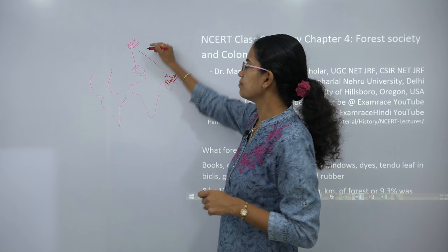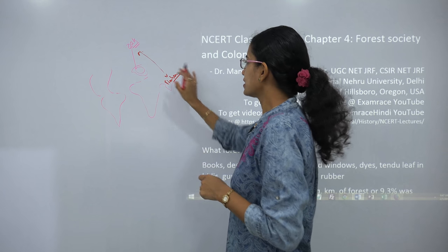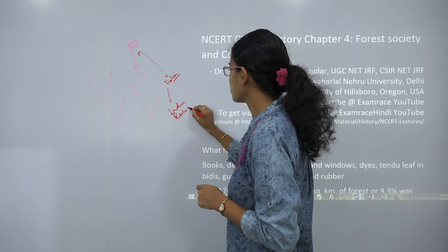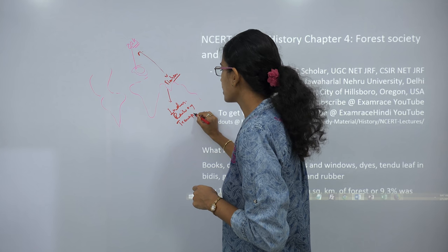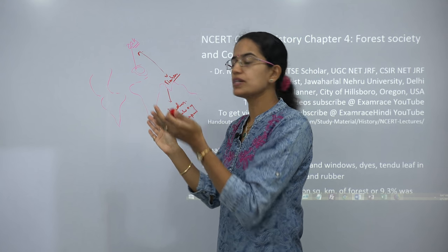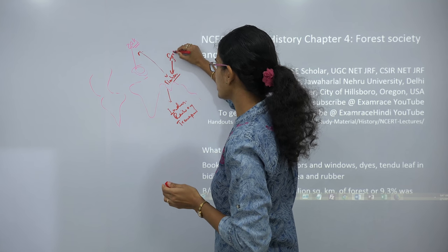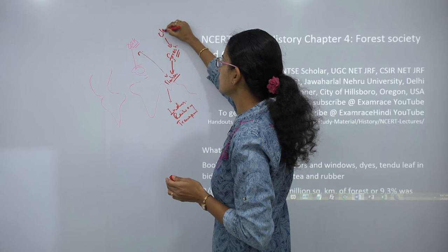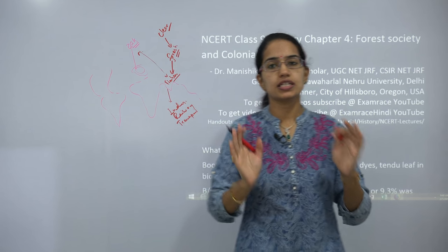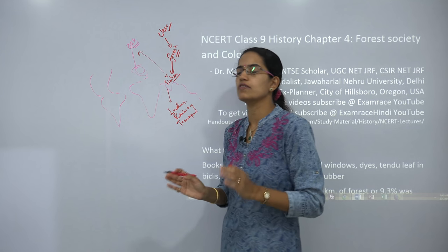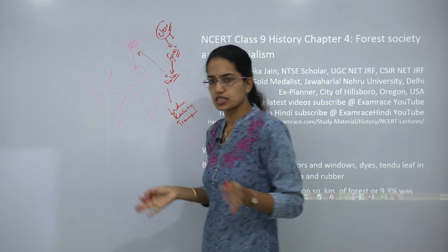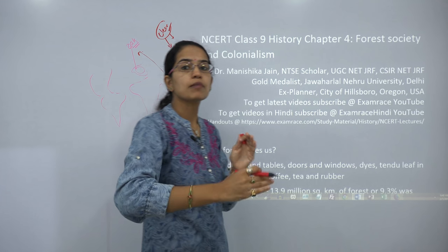India started supplying timber to Britain during that time. This timber was mainly required for the industrialization that was taking place, for the railways that were developing, for the strengthening of the transport network. Now if we want timber for a specific purpose, it definitely comes from forest, and for that you would have to clear the forest. So the areas which were very potentially rich or which had huge dense forest covers were slowly and gradually being cleared off, and the process of deforestation started.